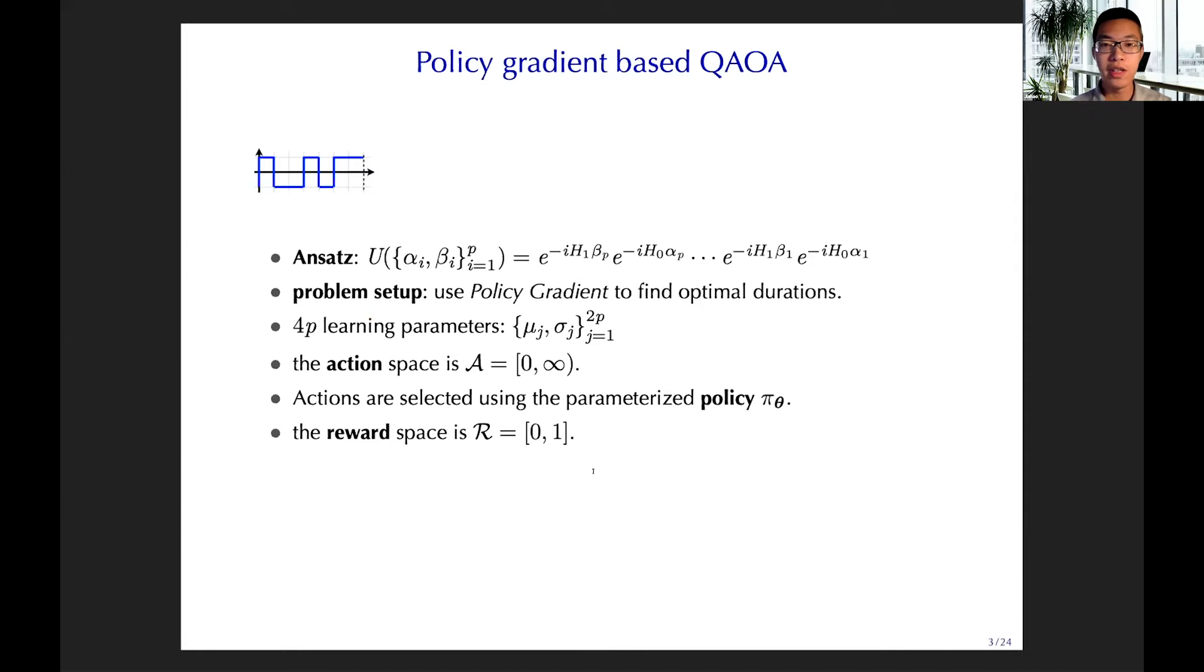We formulate this problem into the MDP, and we use policy gradient from reinforcement learning to solve this problem. We introduce 4P learning parameters. That is basically the parameters for the Gaussian policies of our policy gradient. The action space are the QAOA angles, alpha and beta. And our actions are selected through the parameterized policy, pi theta. And our reward is the fidelity. So it is bounded between zero and one.